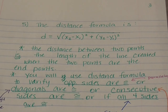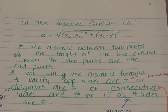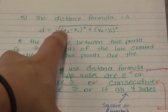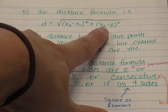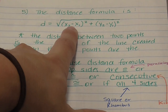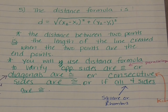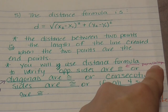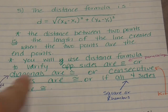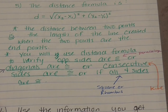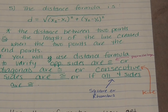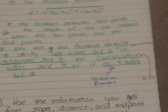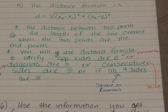Another formula you'll need is the distance formula. The distance between two points is the length of the line between them. You take the difference between the x values squared, add the difference between the y values squared, and take the square root of the whole thing. Use the distance formula to verify opposite sides are congruent (parallelogram), diagonals are congruent (rectangle or square), consecutive sides are congruent, or all four sides are congruent. All four sides congruent means a square or rhombus; two sets of consecutive sides congruent means a kite.